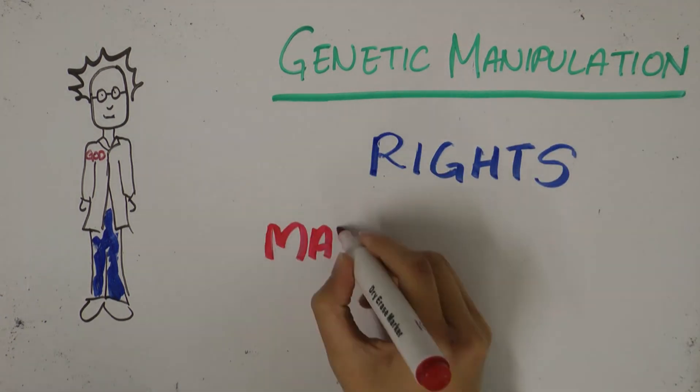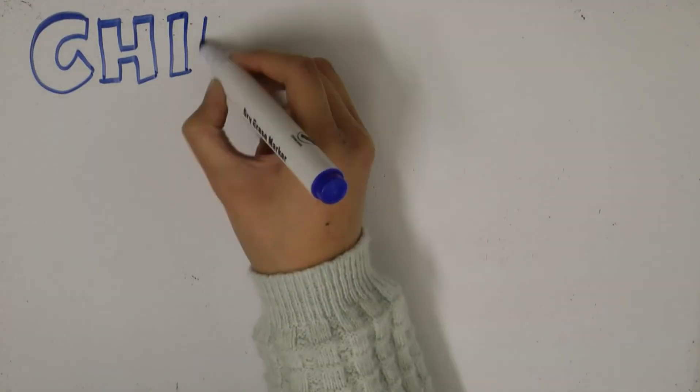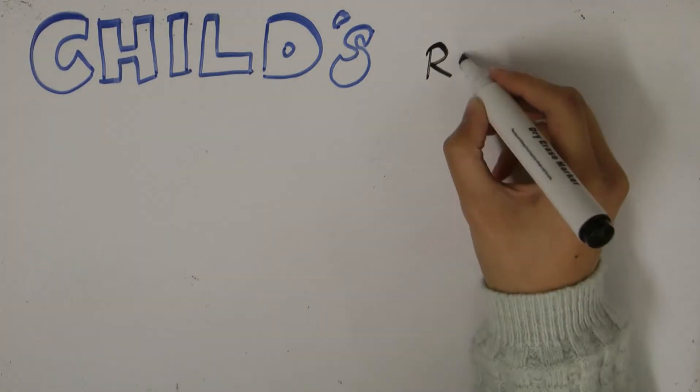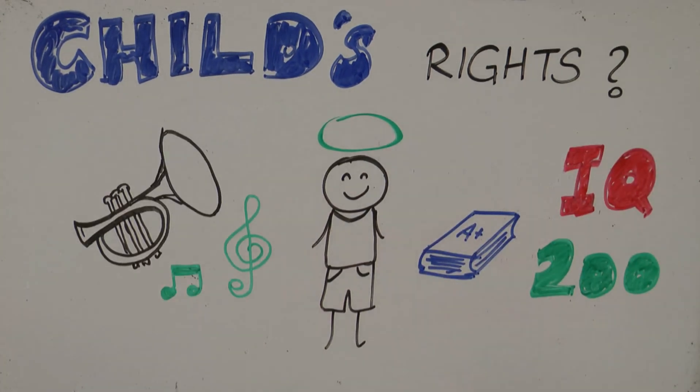Do we have a right to manipulate what many believe is the work of God? What about the resulting child's rights as an individual? Do the rights of a parent extend to such an extent that they can define the very fabric of their child's being?